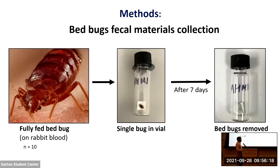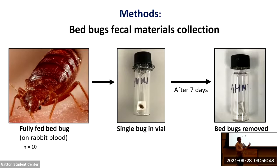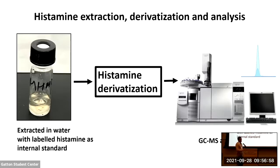The method is straightforward. I fed bed bugs with rabbit blood — we use rabbit blood for feeding bed bugs; some researchers use human blood as well. After fully fed, bed bugs can consume blood up to three times their body size. After fully feeding, I put them in a small vial with filter paper as a harborage. After seven days, I removed the bed bugs and used only the filter paper and vial contaminated with their fecal material to analyze for histamine. For histamine extraction, I extracted histamine in water and used a labeled histamine internal standard. I then performed GCMS analysis for quantifying histamine, using a final histamine-toluene solution as a solvent to quantify the amount of histamine in the bed bug sample.